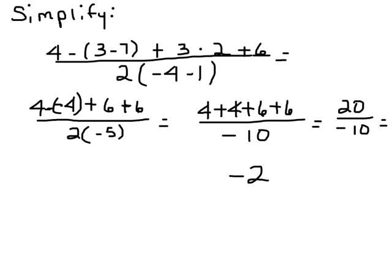Alright, so here we have in parentheses, we have 3 minus 7. So, we know we have to do our parentheses first. So, 3 minus 7 is going to give us negative 4 here. And then I've got a multiplication here, 3 times 2, and I'm going to get 6. On the bottom, I've got this parentheses. So, I've got to solve that. Negative 4 minus 1 is negative 5.